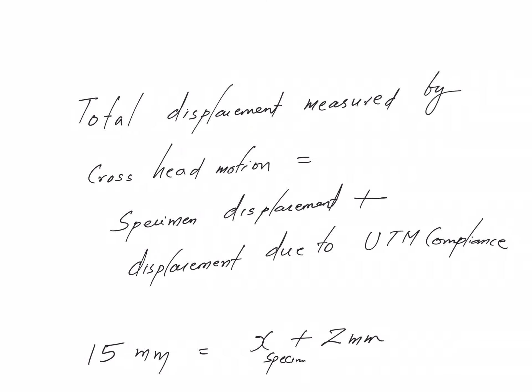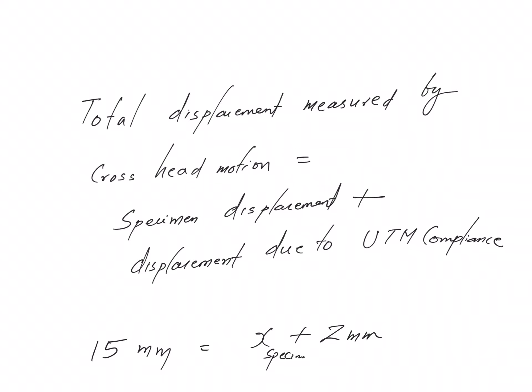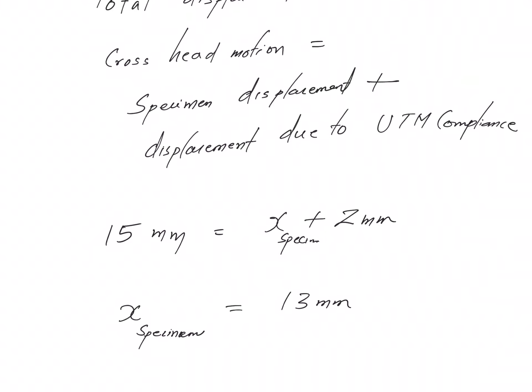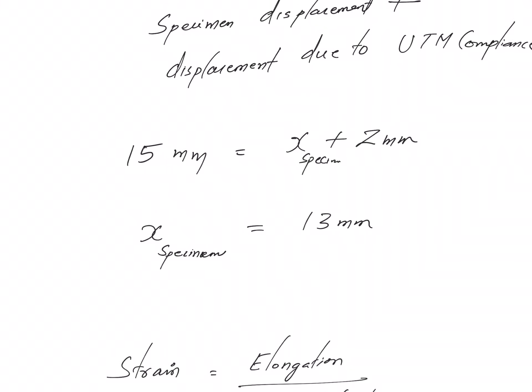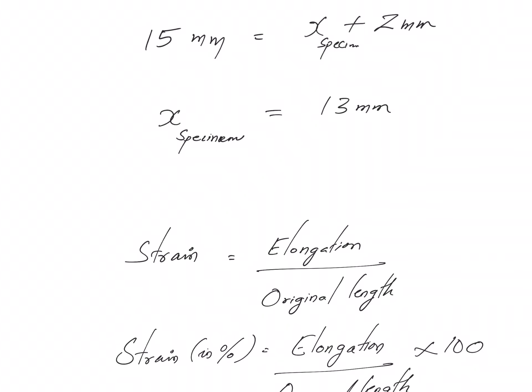So I have just put down whatever I have explained in the last 4 to 5 minutes. The total displacement measured by the crosshead motion is specimen displacement plus displacement due to UTM compliance. To transform the same statement into a mathematical expression, I can write 15 mm as a summation of X specimen plus 2 mm, where X specimen is the deformation felt by the specimen.